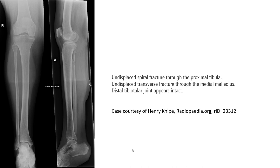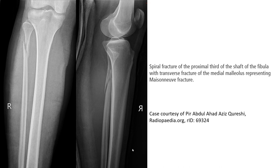This is called Maisonneuve fracture. Another example of Maisonneuve fracture: a displaced spiral fracture through the proximal fibula and a displaced transverse fracture through the medial malleolus. This shows a spiral fracture of the proximal fibula with a transverse fracture of the medial malleolus, representing Maisonneuve fracture.